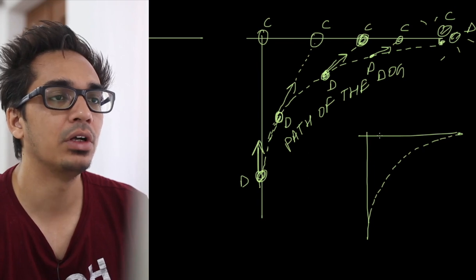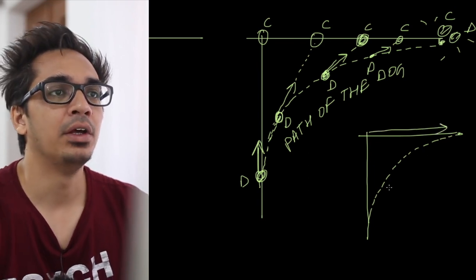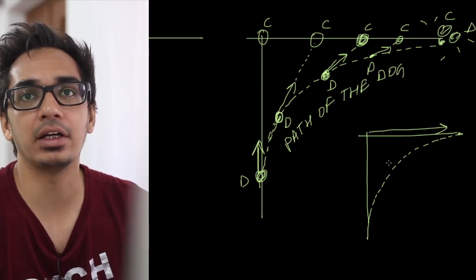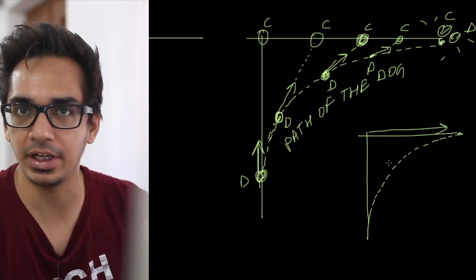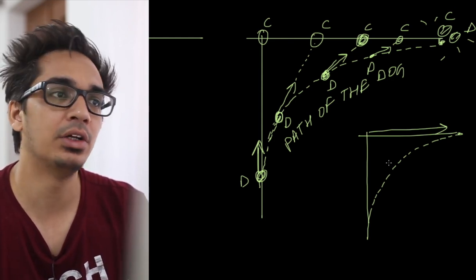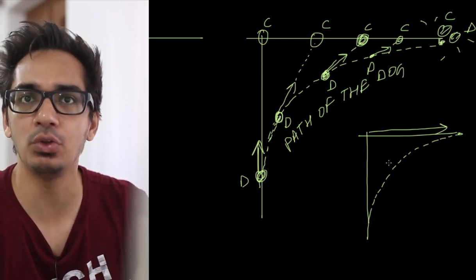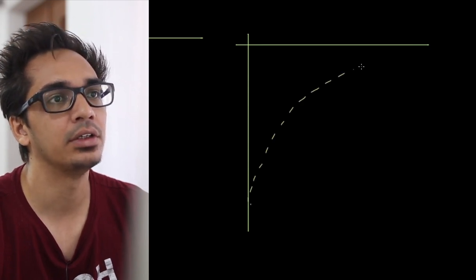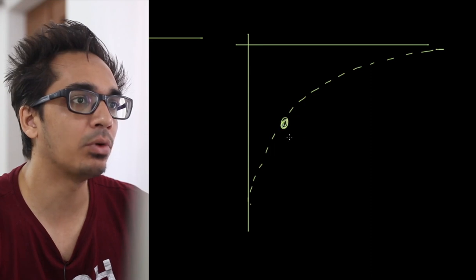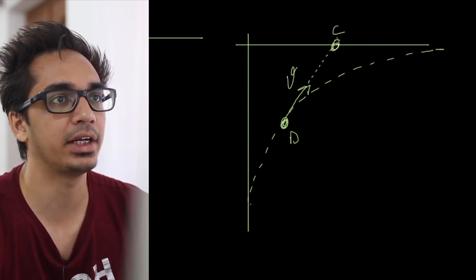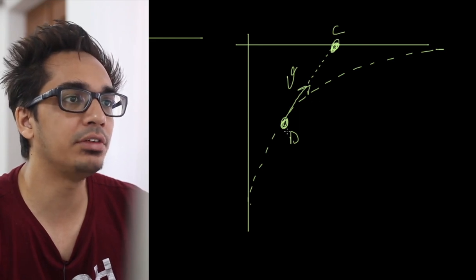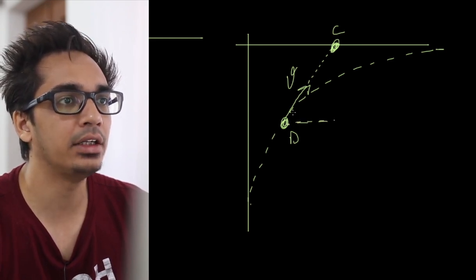This is the path of the dog, and the cat moves in a straight line. Now we have to understand the situation: the dog always follows the cat in a straight line toward it. At some instant the dog has reached here with tangential velocity v, and this means the cat is here because the dog is always directed toward the cat. Suppose this angle is theta.